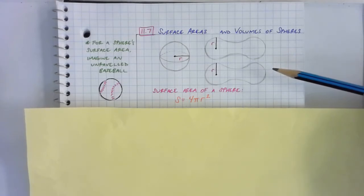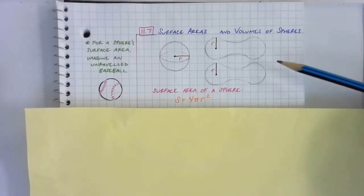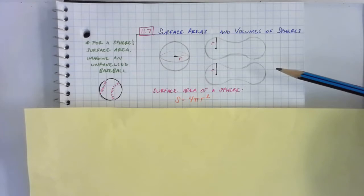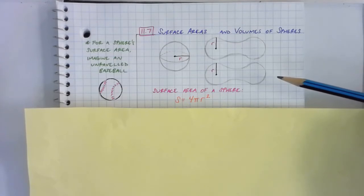So if you've ever seen the sandlot, when they knock the wrapping off the baseball and stuff like that, it basically breaks up into these two leather pieces. This is basically the surface area of every sphere. I mean, you can break it up in lots of different ways and stuff, but this is probably the easiest one to latch on to.